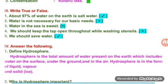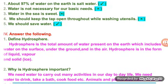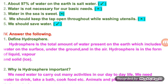Answer the following. Define Hydrosphere. Hydrosphere is the total amount of water present on the earth, which includes water on the surface, under the ground and in the air. Hydrosphere is in the form of liquid, vapour and solid ice.